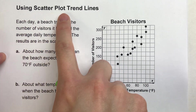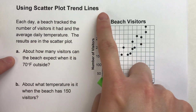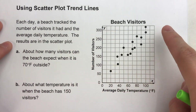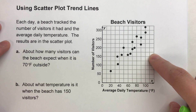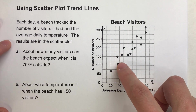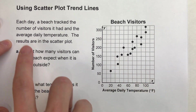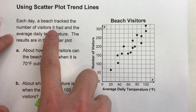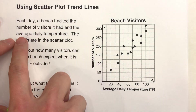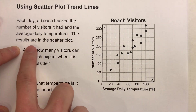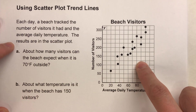Today we're using scatterplot trend lines to answer questions about a scatterplot. Here's our situation: each day a beach tracked the number of visitors it had and the average daily temperature. The results are in the scatterplot.